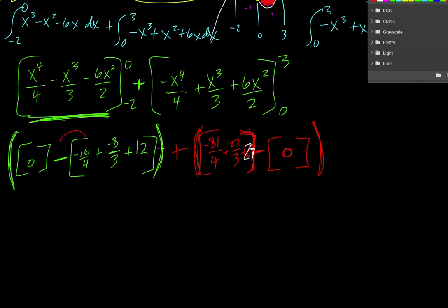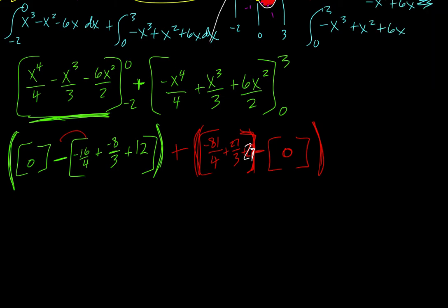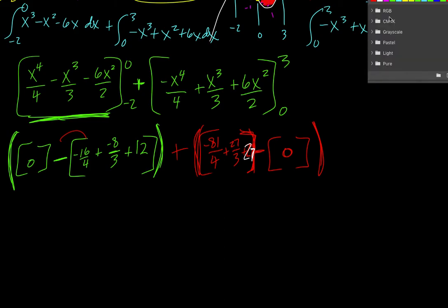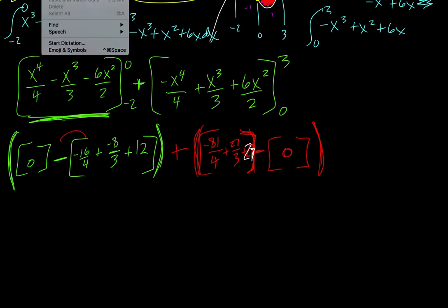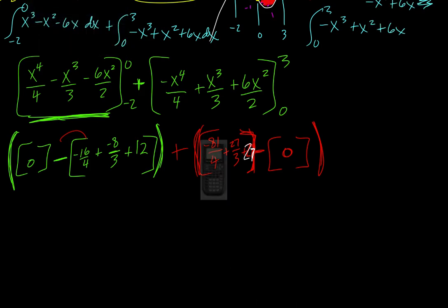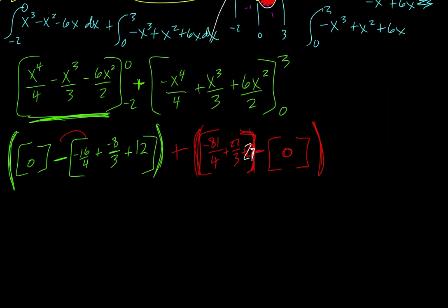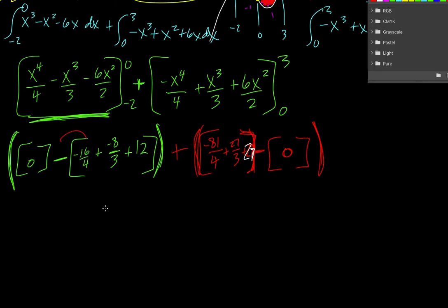So we need to simplify in here, distribute that negative, simplify in here, and when we do that, if you do that you should get 253 over 12. And that's units squared. If you need additional help, please come to Math Lab.